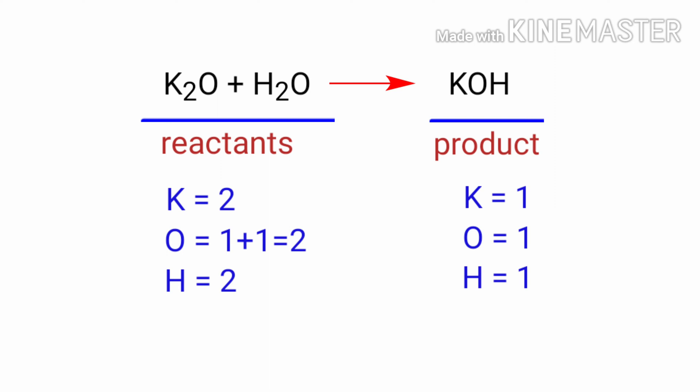If you look at this equation, the equation is not balanced. In the reactants side there are two potassium atoms, two oxygen atoms, and two hydrogen atoms present. On the products side there are one potassium atom, one oxygen atom, and one hydrogen atom present. The number of atoms are not balanced on both sides.